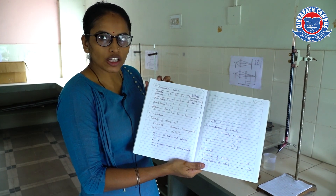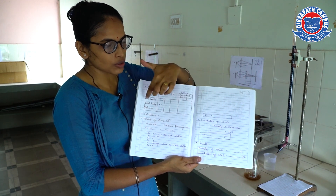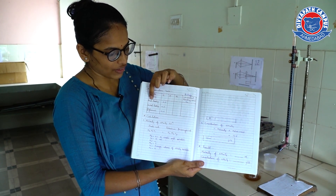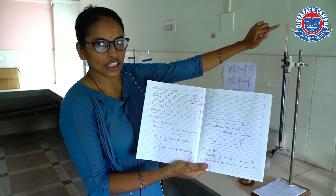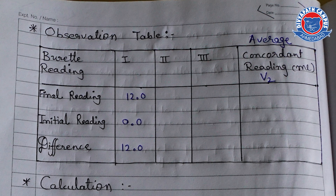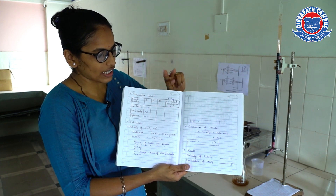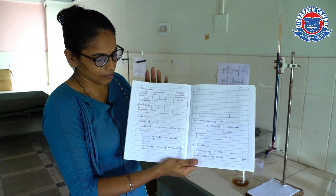This is the observation table. Here we have burette reading: initial reading and final reading. You know that our initial reading is 0, and the final reading — the color change reading — is 12. So the difference is 12. Consequently, you have to take 2 different readings and then take the average of these 3 readings.